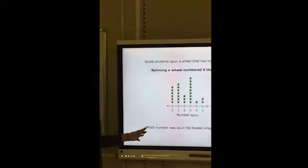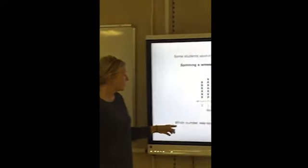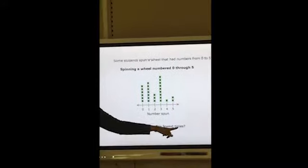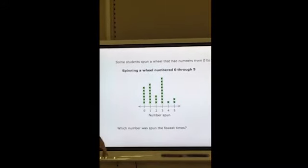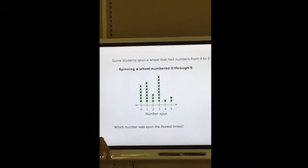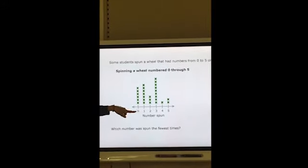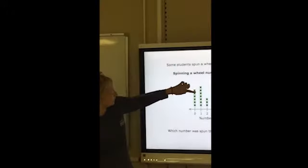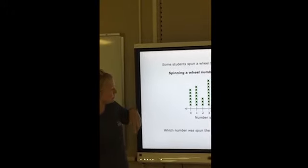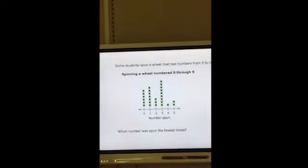And remember, when we read our questions, we want to make sure we read them carefully. It says, which number was spun the fewest times? So on this particular line plot, we're looking at the ones that are the fewest. So we can see that there are 6 students who spun a 0. We can see that there are 7 students that spun a 1, 3 students that spun a 2.